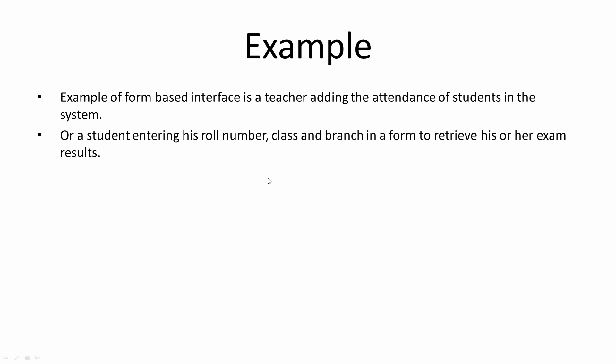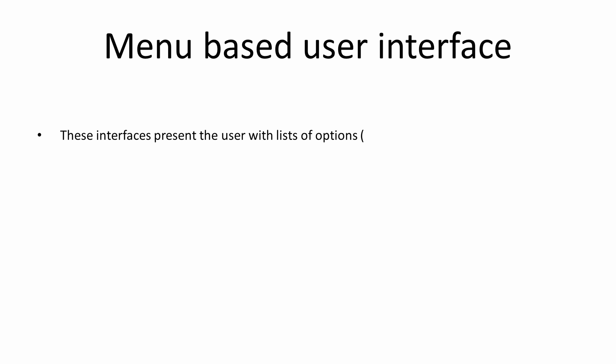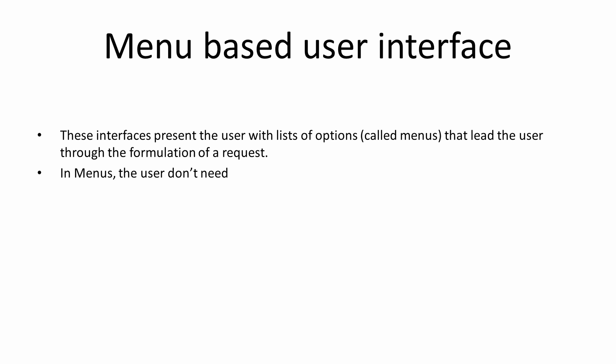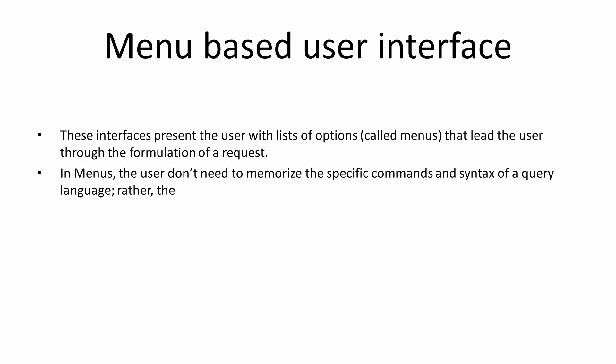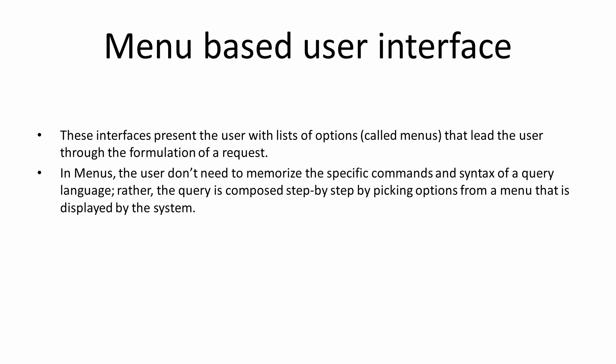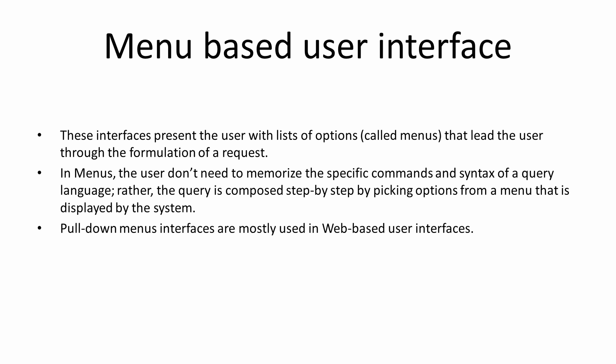Next is menu-based interface. Basically, a menu is presented to the user and the user makes choices available in the menu. Based on those choices, the user sees either another menu or a result. The user doesn't need to memorize specific commands or syntax. Pull-down menus are the most common type used in web-based user interfaces and are often used in browsing interfaces, which allow users to look through database contents in an exploratory or unstructured manner.